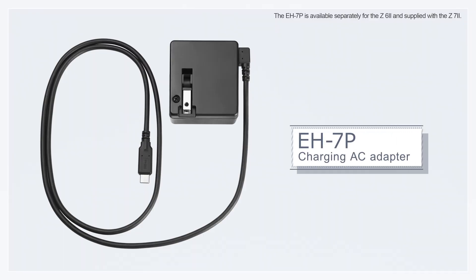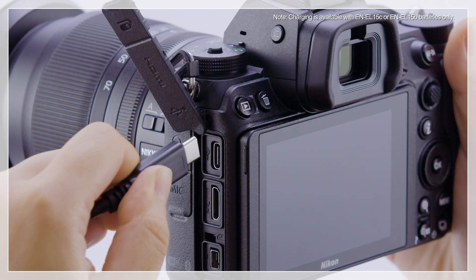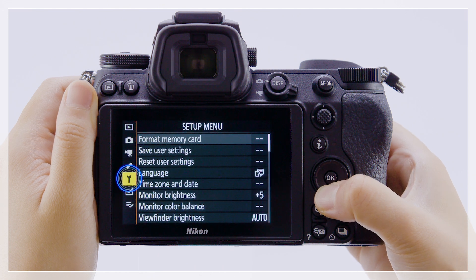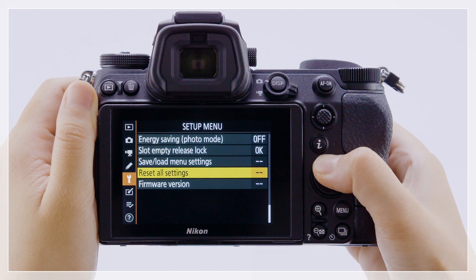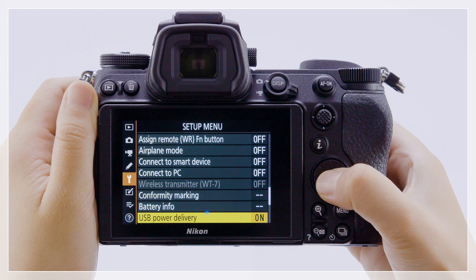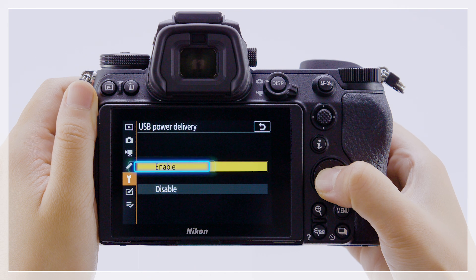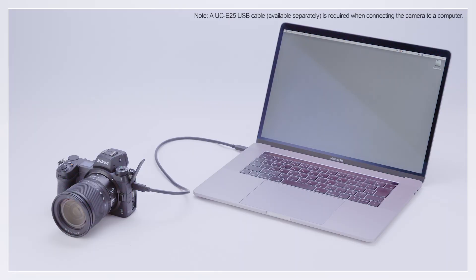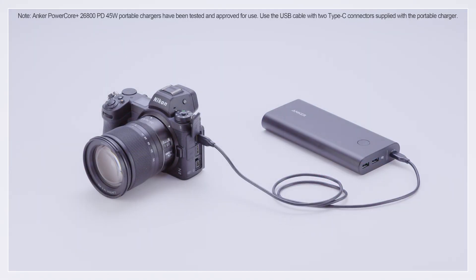When a battery is inserted in the camera, an EH-7P charging AC adapter can be used to power the camera or charge the battery. Confirm that Enable is selected for USB power delivery in the setup menu. The adapter will provide power to the camera when the camera is on and charge the battery when it's off. Computers or portable chargers with Type-C USB connectors can also be used to power the camera or charge the battery.